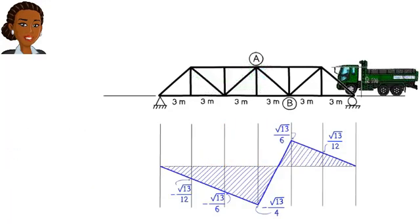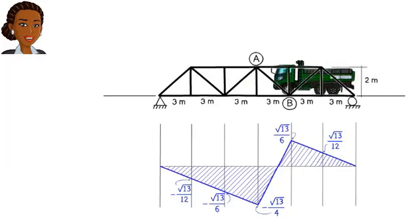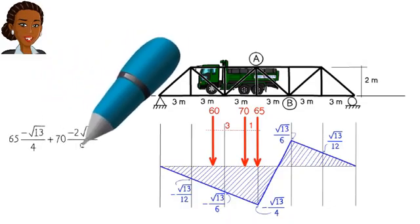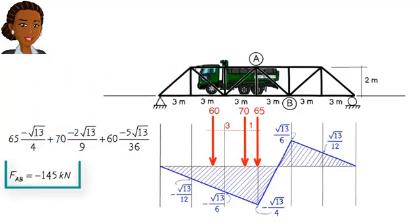If we change the truck's direction of travel and place the vehicle here, we get this configuration for the load series. Under this loading scenario, the compressive force in AB comes out to be 145 kilonewtons.